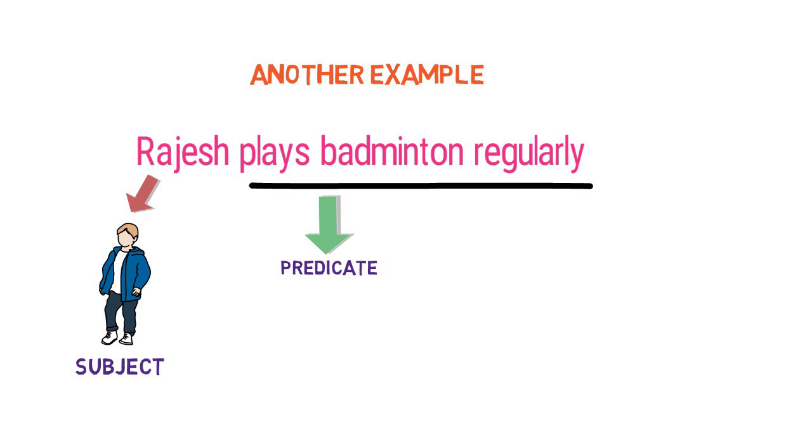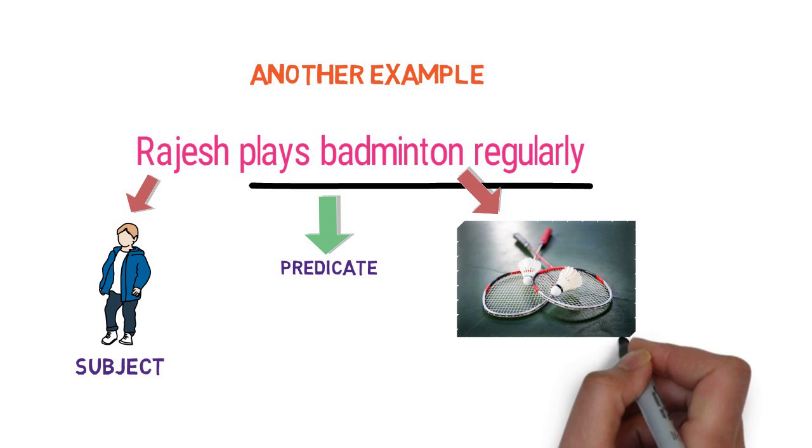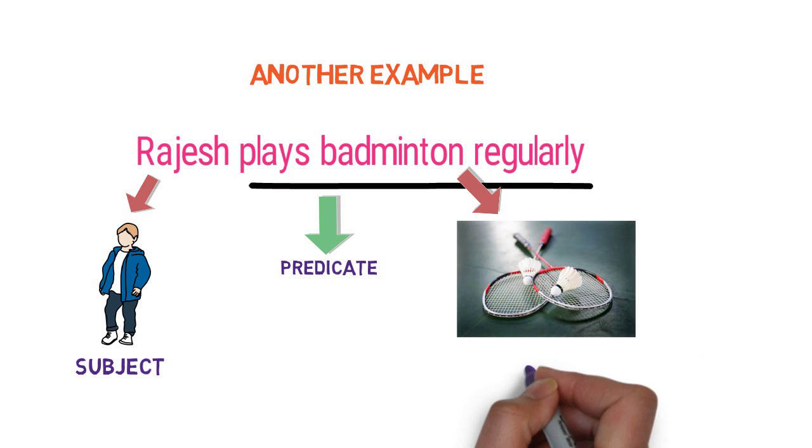And what is the thing at the receiving end here? Or what does Rajesh use for playing? It is the badminton. So badminton is the object here. I hope you are clear now about subject, predicate, and objects.